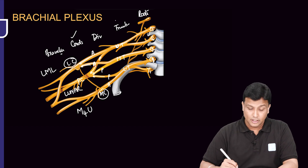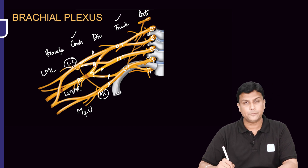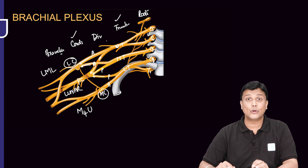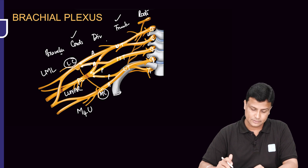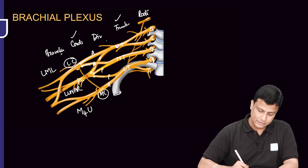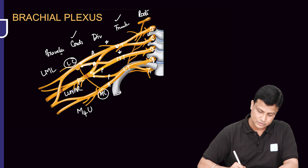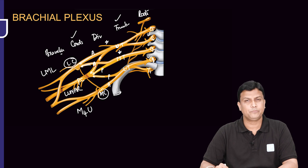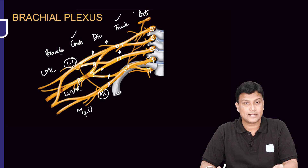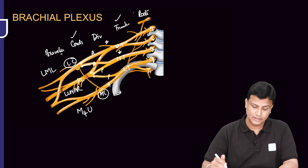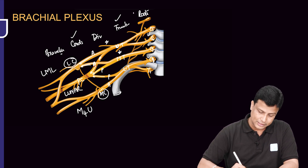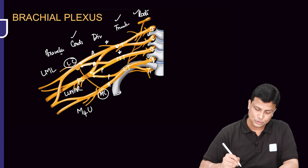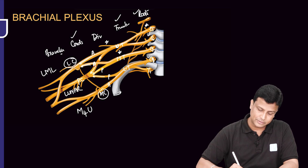We also get branches from the trunk — only the upper trunk gives branches: the suprascapular nerve and the nerve to subclavius. Branches also arise from the roots.